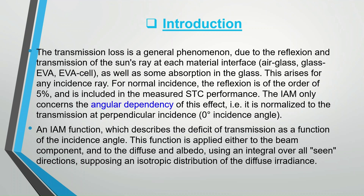The transmission loss is a general phenomenon due to the reflection and transmission of the sun's ray at each material interface: air-glass, glass-EVA, EVA-cell, as well as some absorption in the glass. This arises for any incident ray.